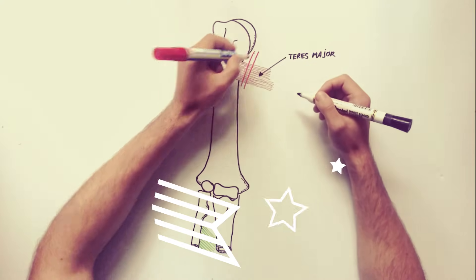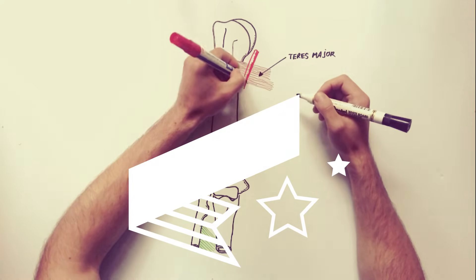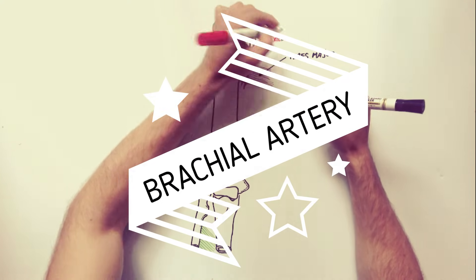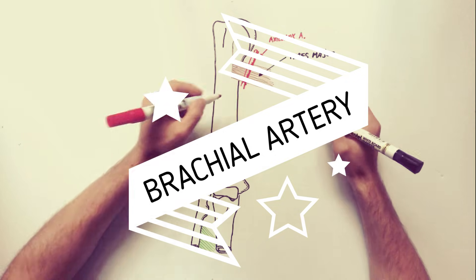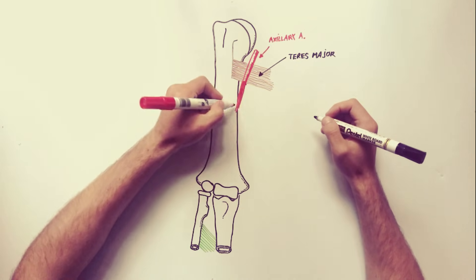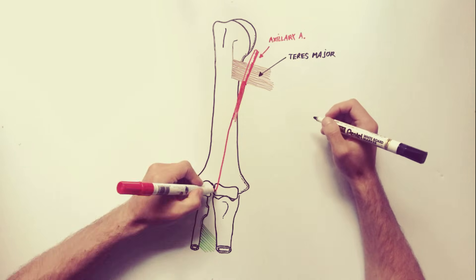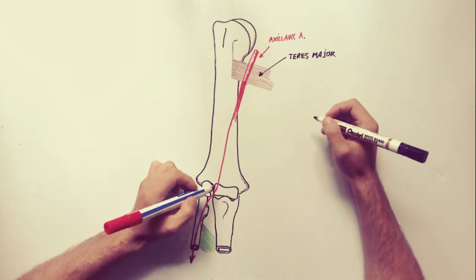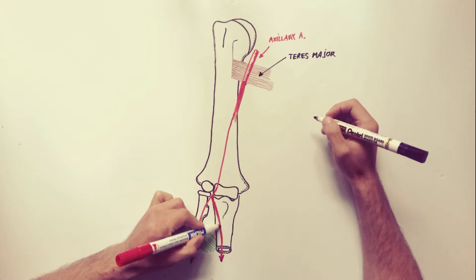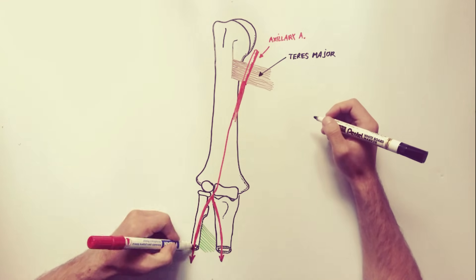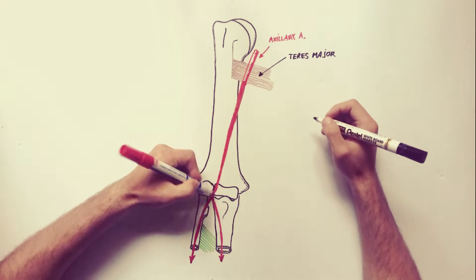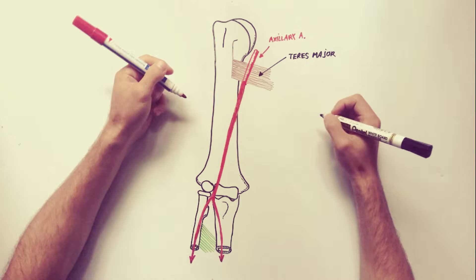The brachial artery is the main artery of the arm. It begins at the lower border of the teres major muscle as a continuation of the axillary artery and terminates in front of the elbow at the level of the neck of radius by dividing into radial and ulnar arteries.